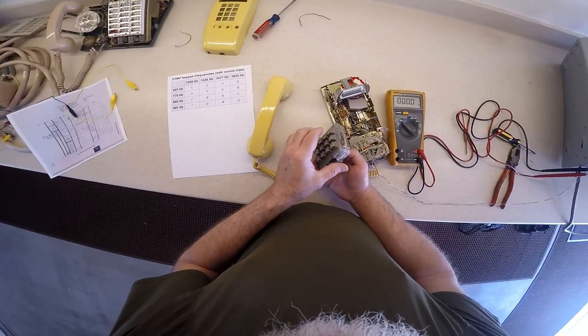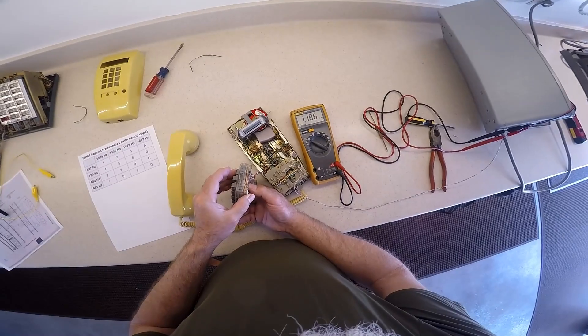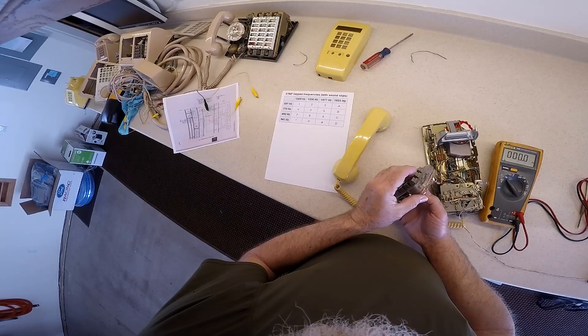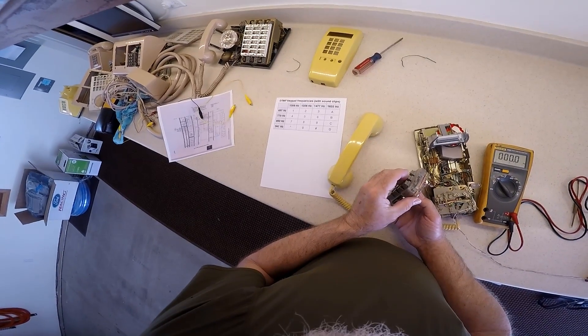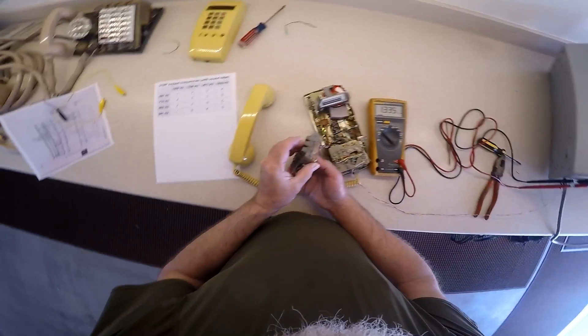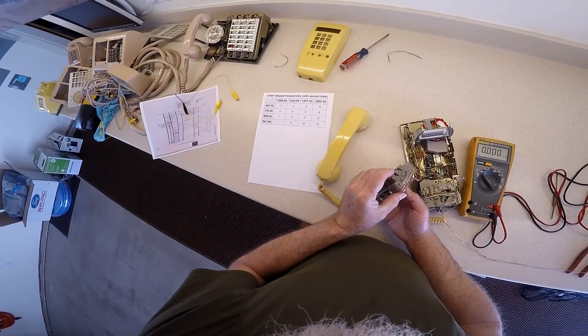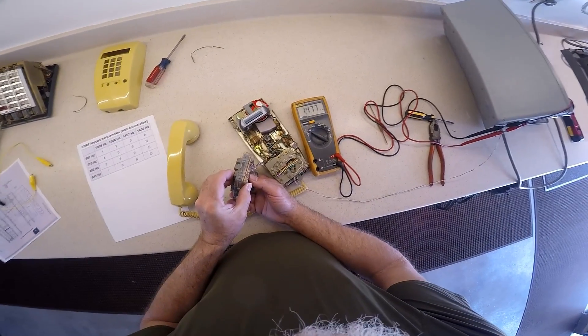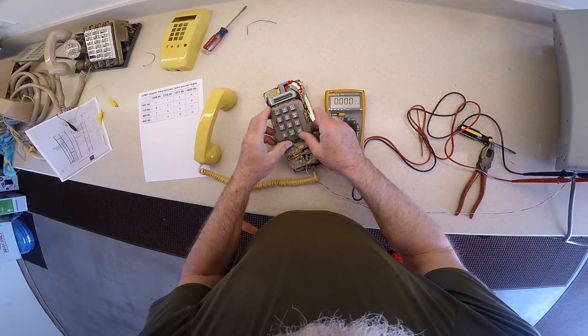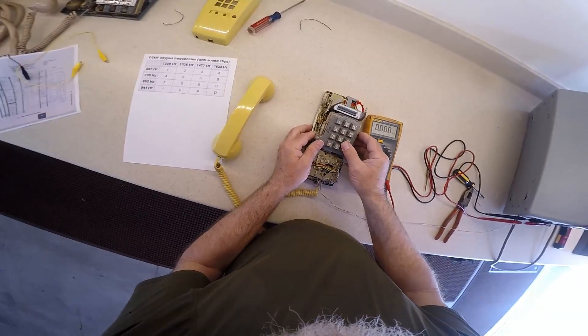Okay, back to the high frequencies. One and four should give us 1209, right on the button. Two and five should give us 1336. We're one off. And let's see, three and six should give us 1477. Right on the button. So this phone should now work. That's all there is to it. Put it back together and test it out.